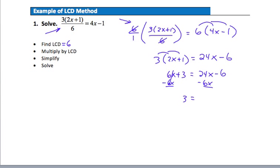On the right side, 24x minus six x is going to give me 18x. Alright, continuing on, I need now to add the six to both sides. So it looks like I get 9 equals 18x. Divide both sides by 18.